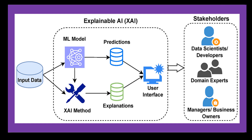Next comes Explainable AI. Explainable AI refers to the process of making machine learning models more transparent, comprehensible, and interpretable by providing detailed explanations about how and why they arrive at specific decisions or outputs. The goal of Explainable AI is to address major challenges facing contemporary AI, including opacity, lack of accountability, and diminished trust among end users, regulators, and other stakeholders.